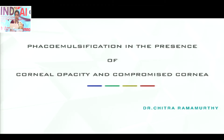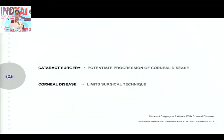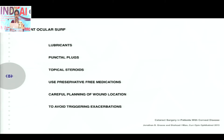Taking you on to phacoemulsification in the presence of corneal opacity and compromised cornea. Here there are two challenges. You are doing a cataract surgery to visually rehabilitate the patient, but you could be potentiating the corneal disease. The second challenge is that the corneal compromise already created limits visibility, limiting a good cataract surgery. So that is a two-way challenge.